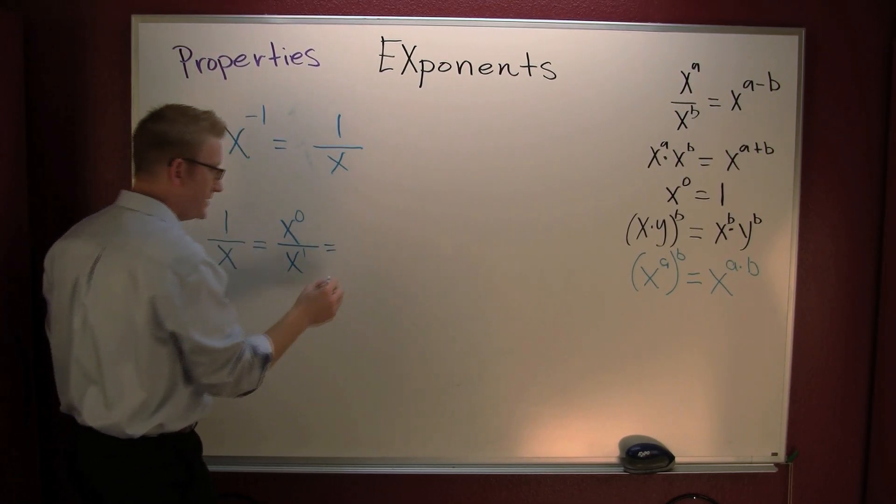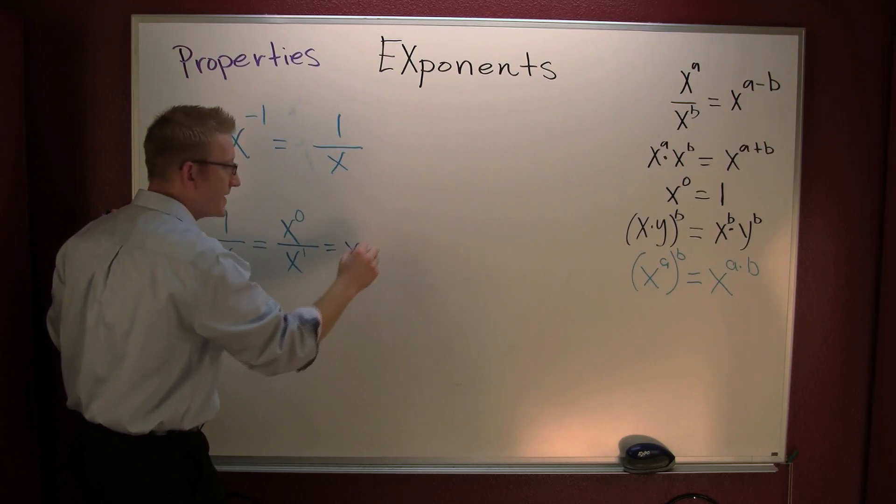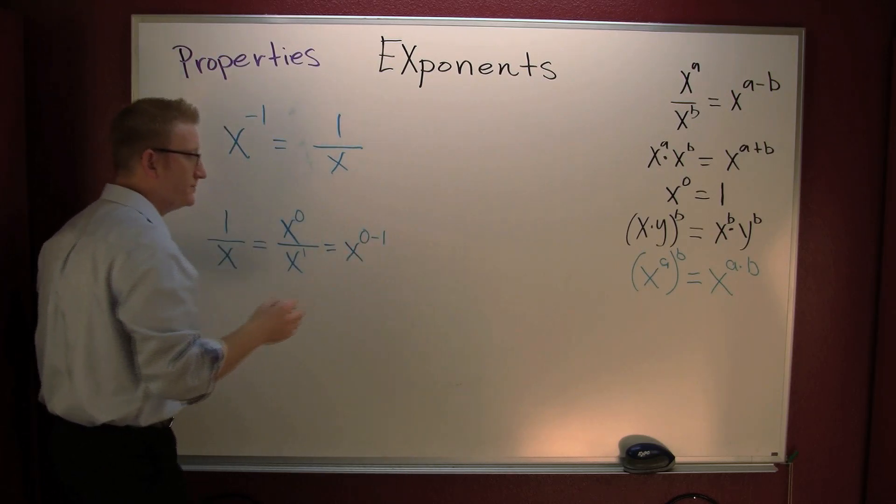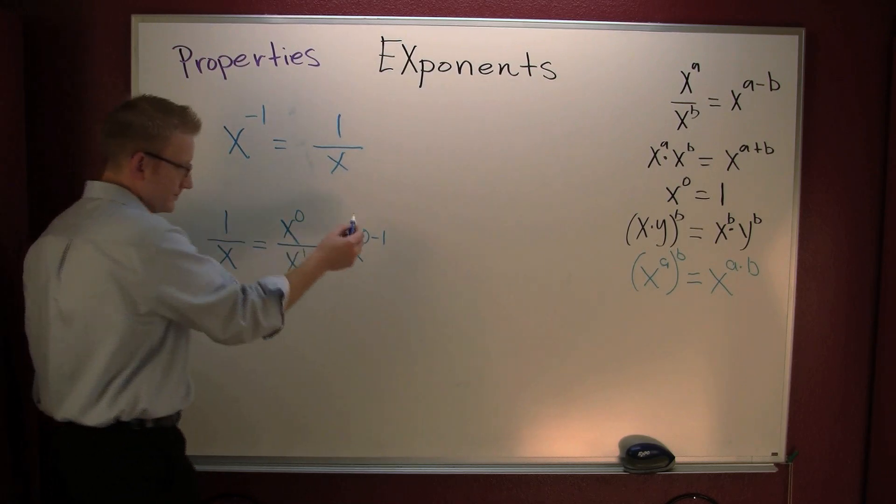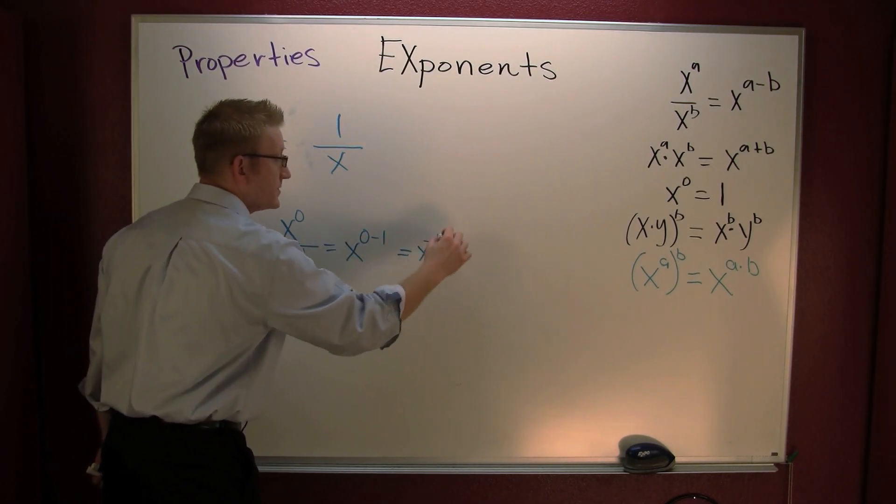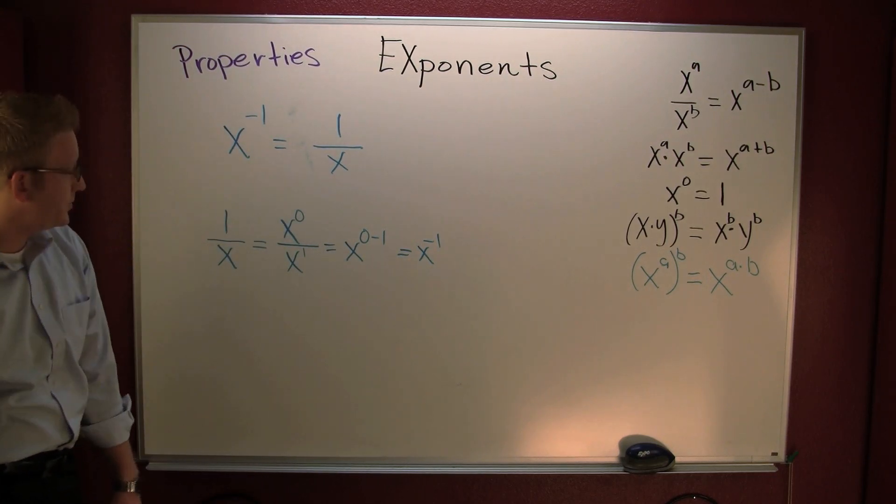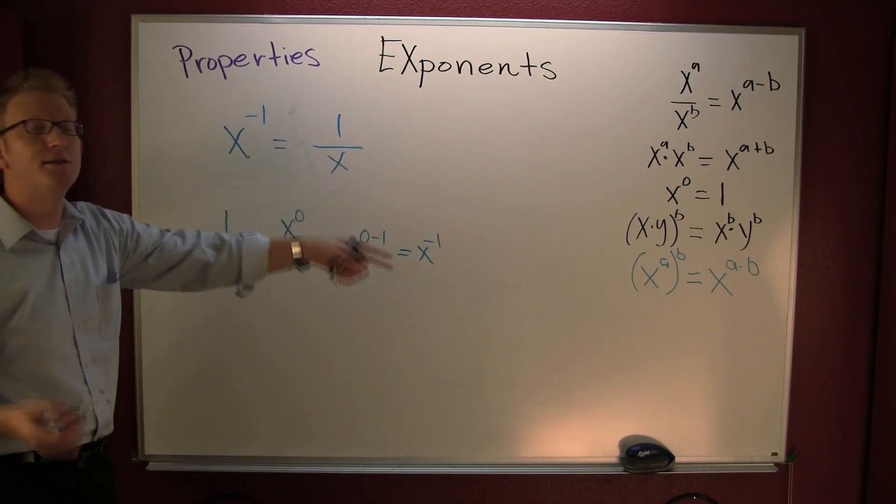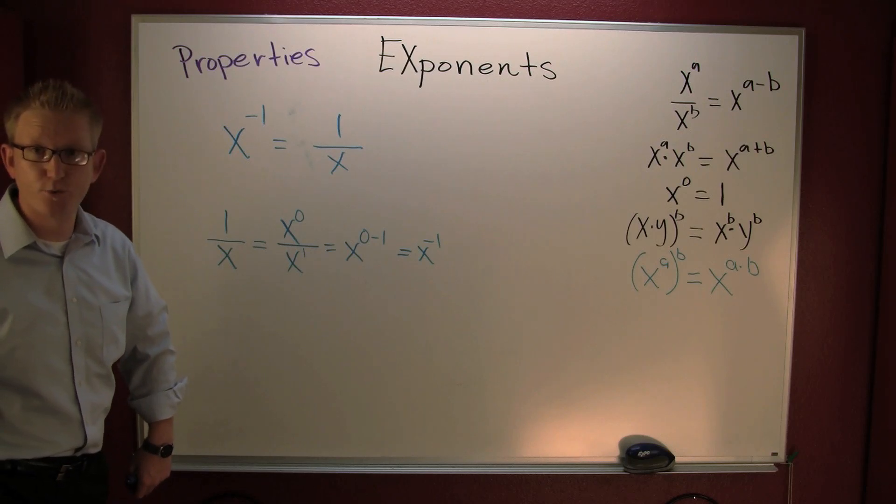But wait, there's more. This is x to the zero minus one. All right, what's zero minus one? It's x to the minus one. Yeah, so algebraically they are equivalent, and that's my next rule.